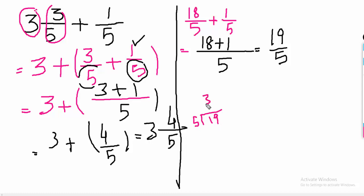5, 3's are 15 minus and 4 would be here. Now, we can write, 3 is the whole number, 4 is the remainder and 5 is the divisor.